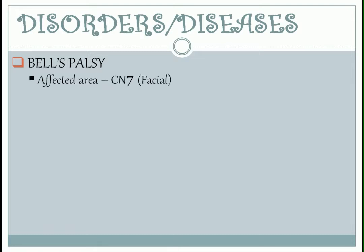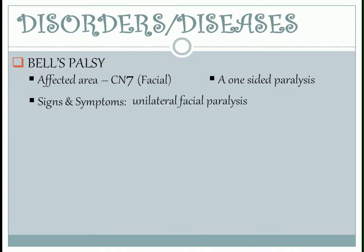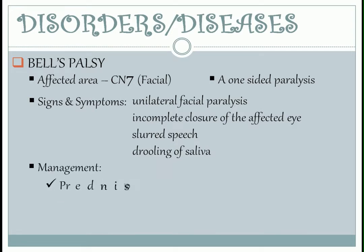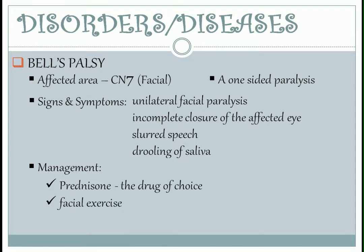Bell's palsy — the affected area is cranial nerve number seven. It is a one-sided paralysis. Signs and symptoms include unilateral facial paralysis, incomplete closure of the affected eye, slurred speech, and drooling of saliva. Management: Prednisone is the drug of choice. Facial exercises promote circulation and warm compress dilates the blood vessels.